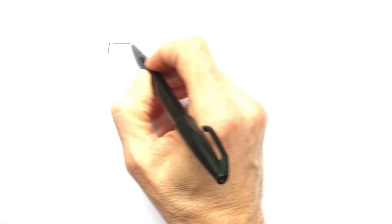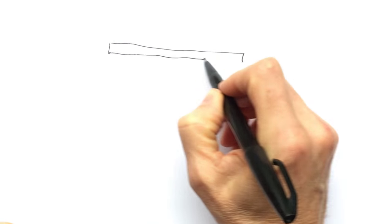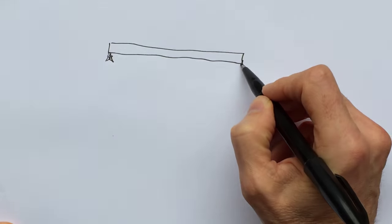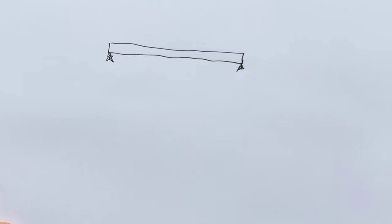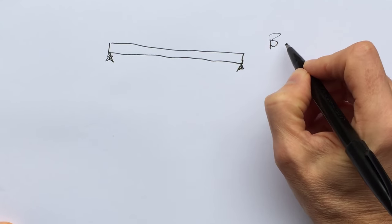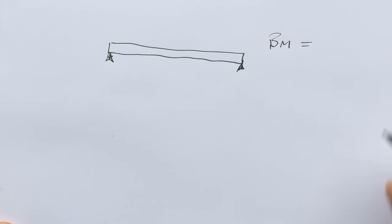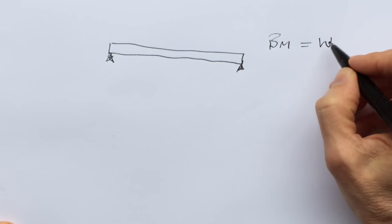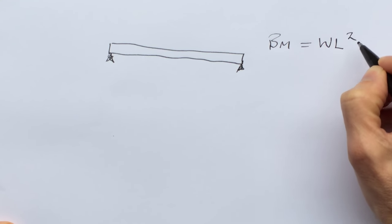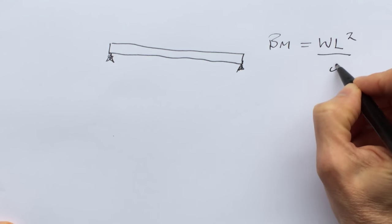So we're going to start with a beam and we're going to assume it's timber and supported at both ends, so it's a simply supported beam. The bending moments can be worked out by the total load per meter times the length squared over 8.